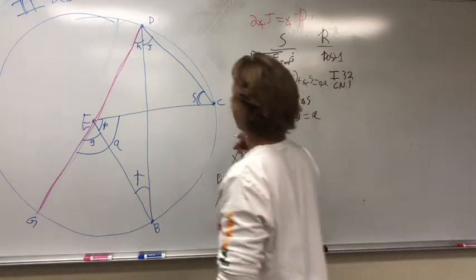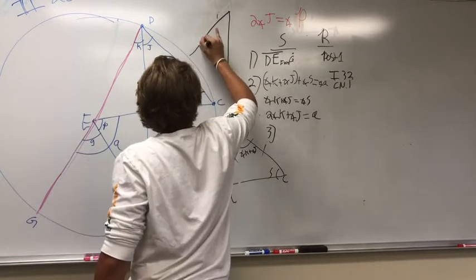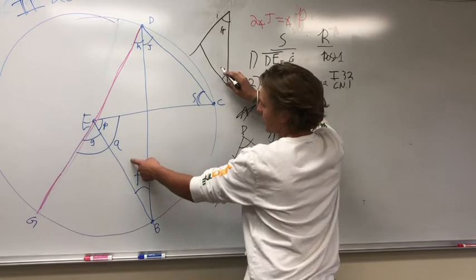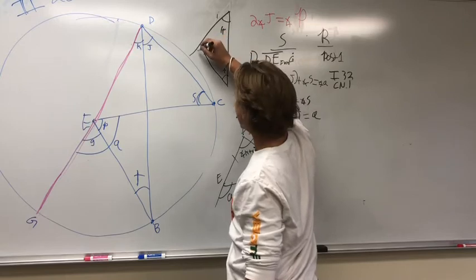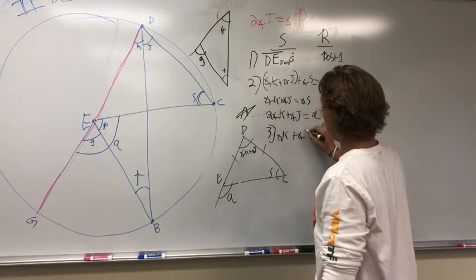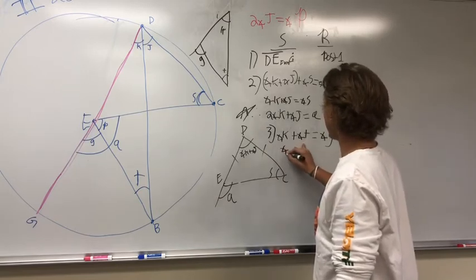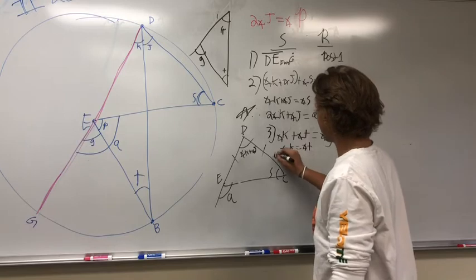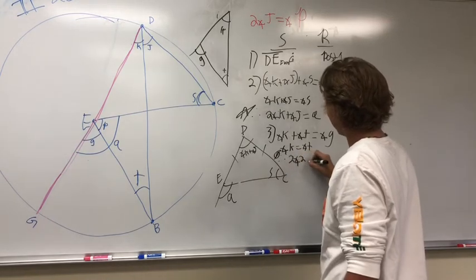Now we have another triangle to prove. In this triangle, angle K plus angle T equals angle G. We know that angle K equals angle T, therefore 2·angle K equals angle G.